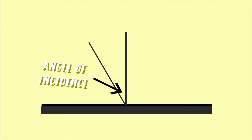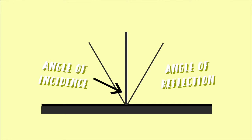Now that we've got that done, it's time to draw the reflected ray. The law of reflection states that the angle of incidence is always equal to the angle of reflection. Therefore, just like the incident ray, we have to measure the angle relative to the normal. The angle between the reflected ray and the normal is called the angle of reflection, which is 30 degrees as well. And that is the complete diagram.